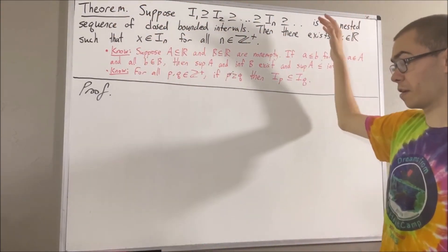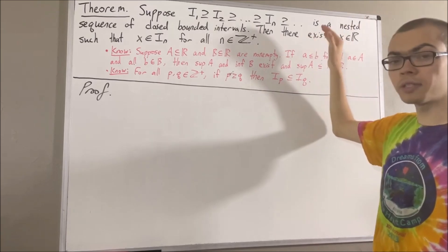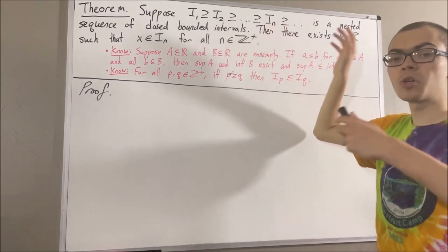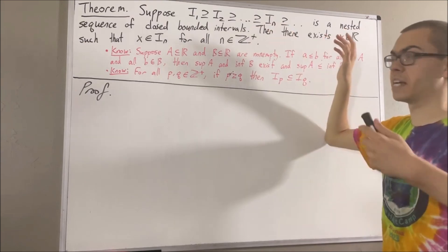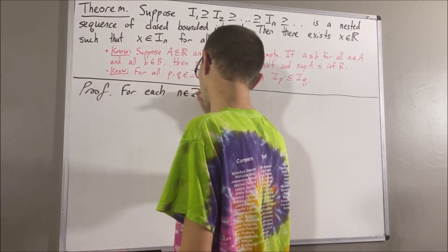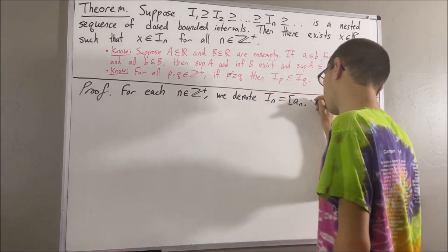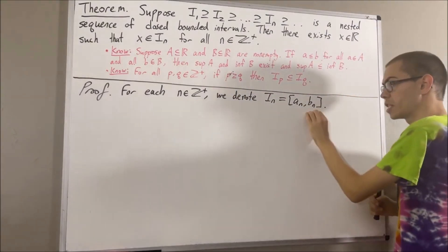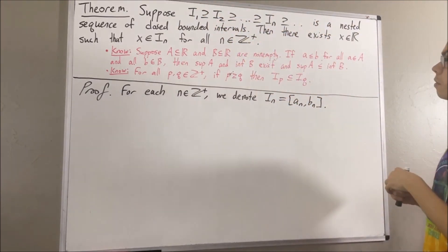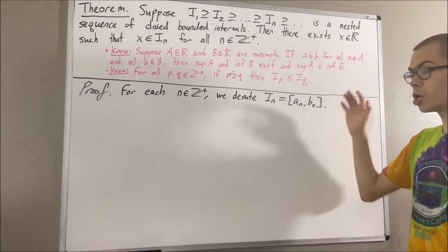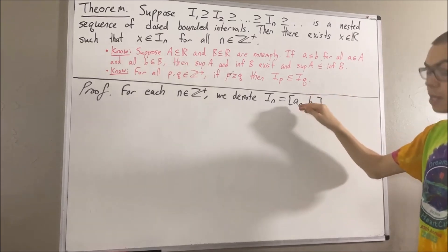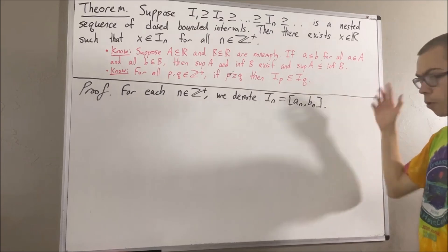For each positive integer n, we're going to denote the smallest element of In as an, and the largest element of In as bn. This is the representation we'll use for each of our closed bounded intervals. And we're going to denote the set capital A by the set consisting of a1, a2, a3, and so on and so forth.